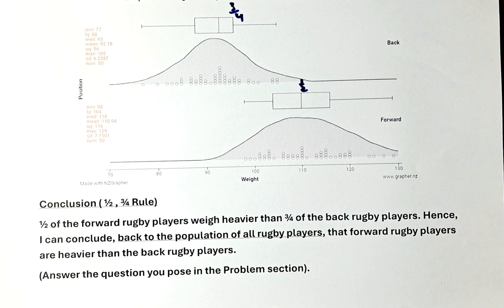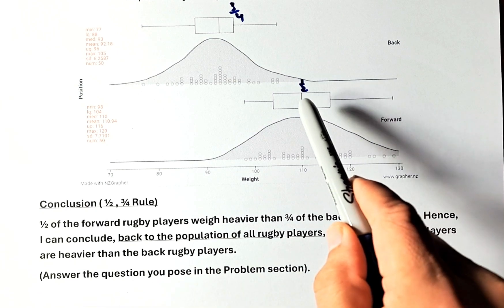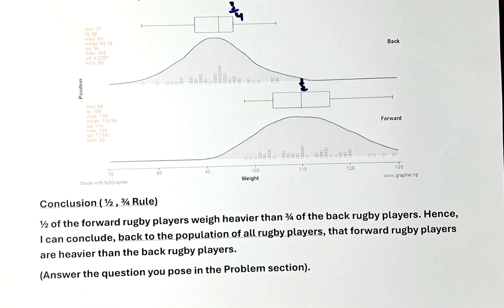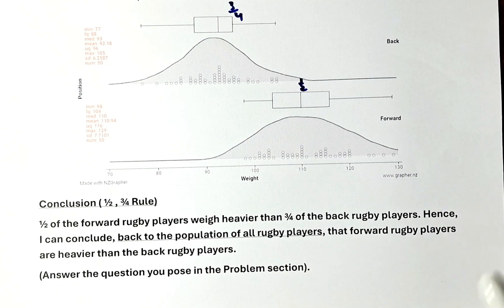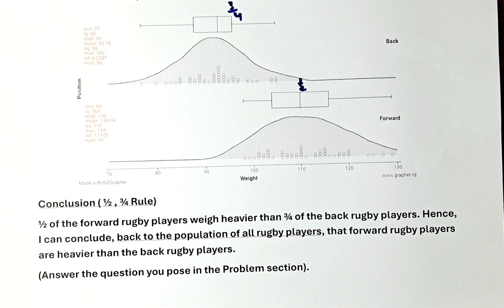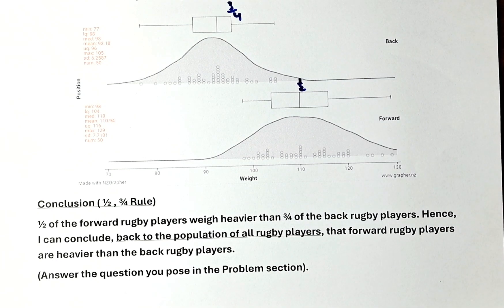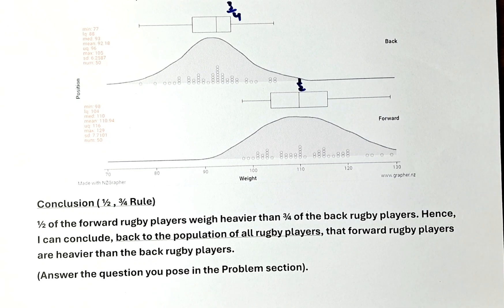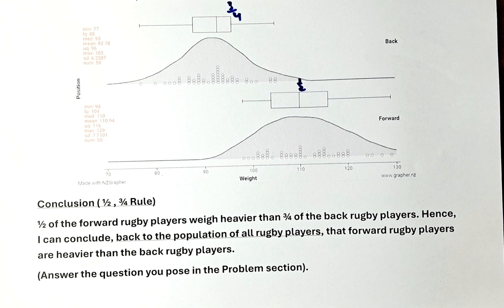The conclusion for the half-three-quarter rule: half of the forward rugby players — that is, the median — is heavier than three-quarters of the back rugby players. Hence, I can conclude — and again, you must say the magic words — back to the population of all rugby players, because you are interested in the population and not the sample, we can claim that forward rugby players are heavier than the back rugby players.